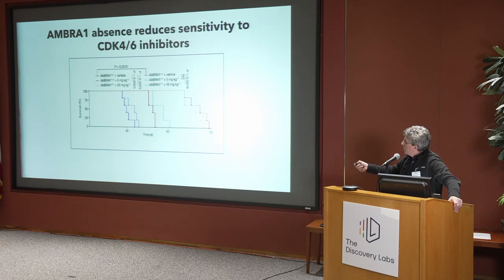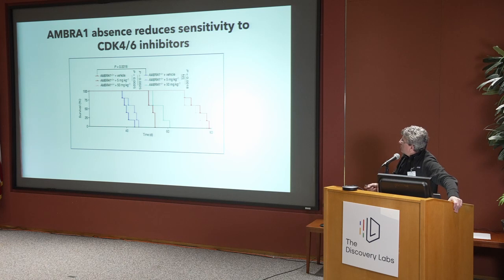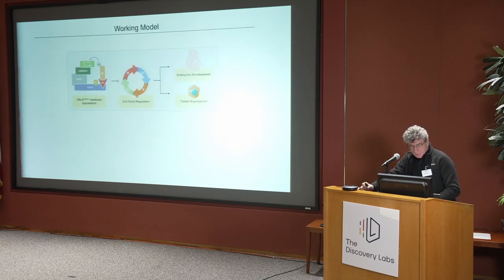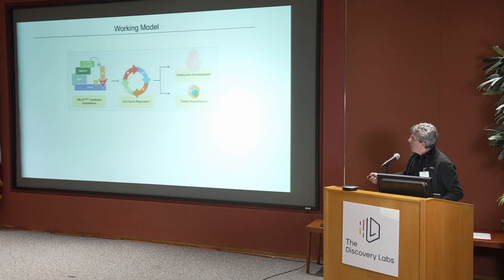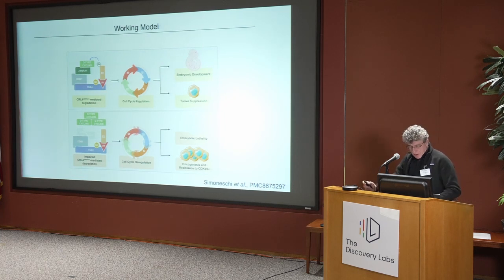However, if we inject AMBRA1 knockout cells into mice, we see a completely different story. The low dose has no effect — really like vehicle — and even the high dose increases survival, but not as well as when using AMBRA1 wild-type cells. The absence of AMBRA1 reduces sensitivity to CDK4 and CDK6 inhibitors. In conclusion, CRL4-AMBRA1 controls cell cycle progression by inducing the degradation of cyclin D1, and deregulation of this event induces embryonic lethality, oncogenesis, and resistance to CDK4/6 inhibitors.